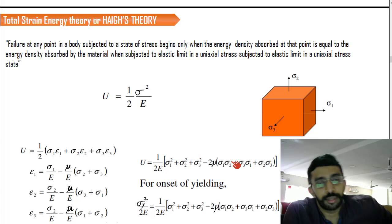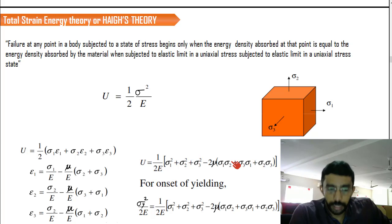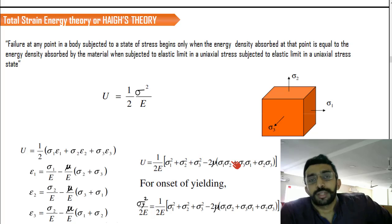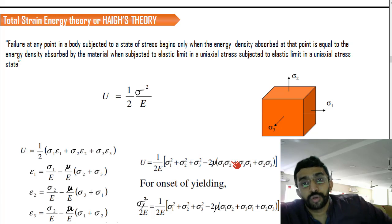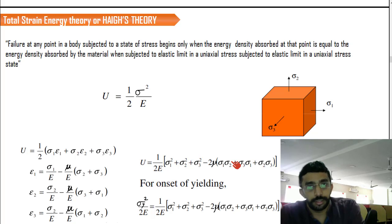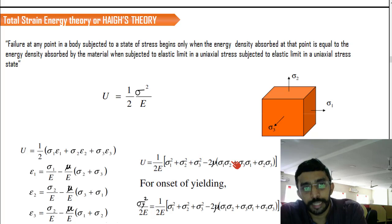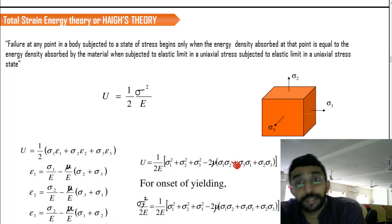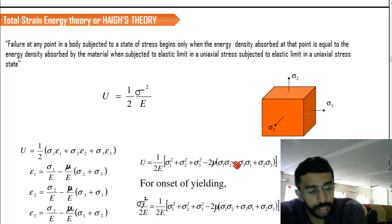For the total strain energy theory — the Haigh's theory — it states that failure at any point in a body subjected to a state of stress begins only when the energy density absorbed at that point equals the energy density absorbed by the material when subjected to the elastic limit in a uniaxial stress state.